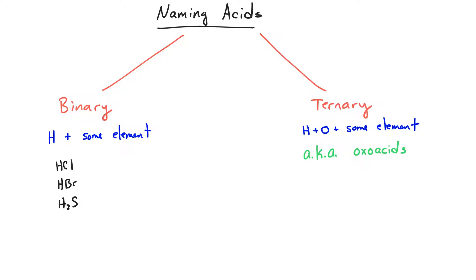Examples of ternary acids are acids that usually contain a polyatomic ion, such as HNO3, H2SO4, and CH3COOH.